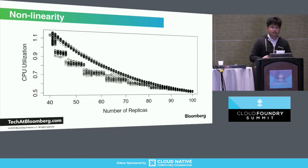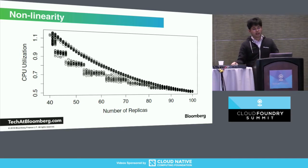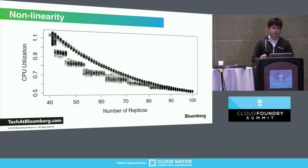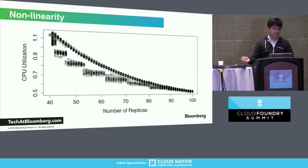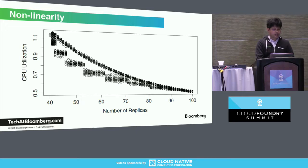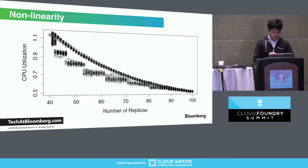Even though these linear models are useful, it's important to note that our systems are not linear. There are serial components in our applications and communication overhead between dependencies like databases or microservices. Even though there's a sort of linear relationship between utilization and number of instances, there are still non-linear components attributable to startup time, warm-up time, and other overhead in the system.